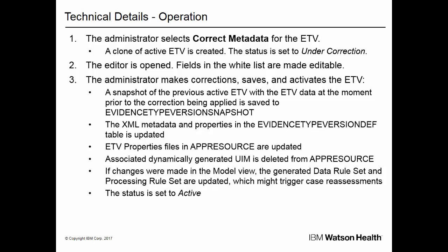The snapshot is used to show the correction version history for the ETV, including the XML metadata and properties for the default locale. The snapshots do not affect caseworkers, eligibility and entitlement, SIR calculations, and so on. The XML metadata and properties in the Evidence Type Version Def table is updated. ETV properties files in App Resource are updated. Associated dynamically generated UIM is deleted from the App Resource table. If changes were made in the model view, the data rule set and processing rule set are updated — for example, the description can be created or overwritten in the generated data rule set. Since the data rule set is used to access case evidence from eligibility and entitlement rules, a reassessment might be triggered; however, the eligibility result will not change. The status of the ETV is then set to Active.